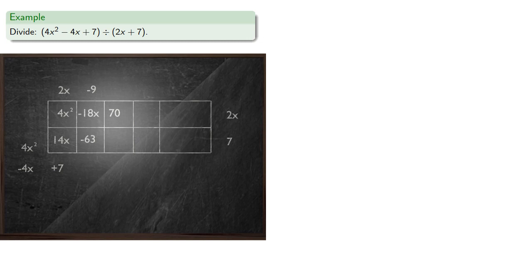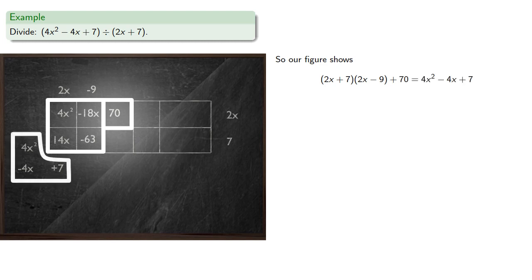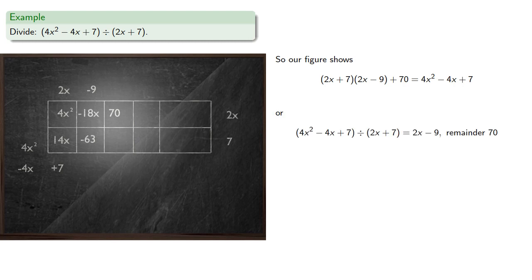And at this point, because the degree of this term is lower than the degree of the height, we don't want to continue because then we'll get fractional answers. And so our figure shows several things. First of all, this part is the product 2x plus 7 times 2x minus 9. But then if we add 70, we get our original dividend. Or we can divide by either factor and get a statement about a quotient with remainder.